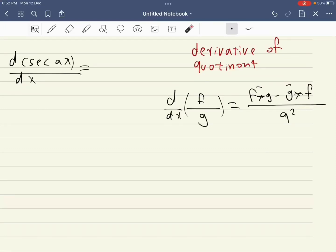Hello dears, today I want to show you how we can differentiate secant of ax. We have a special rule to differentiate quotients. As you see, the derivative of this quotient f over g becomes f prime times g minus g prime times f, all over g squared.